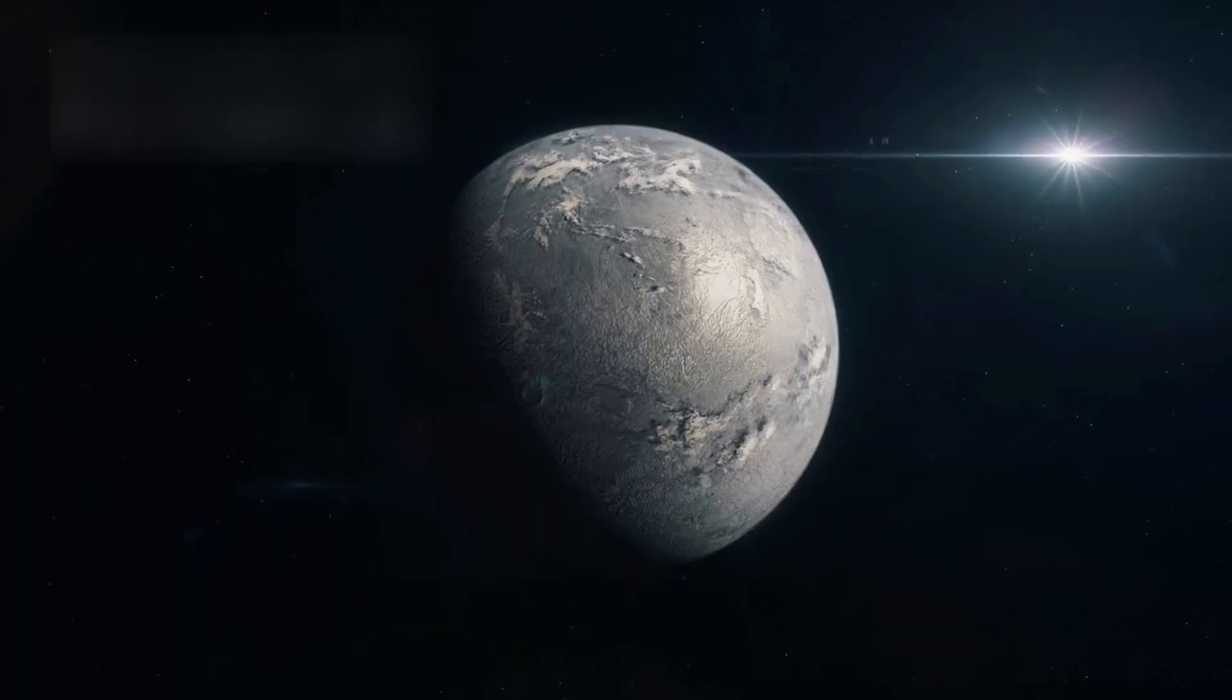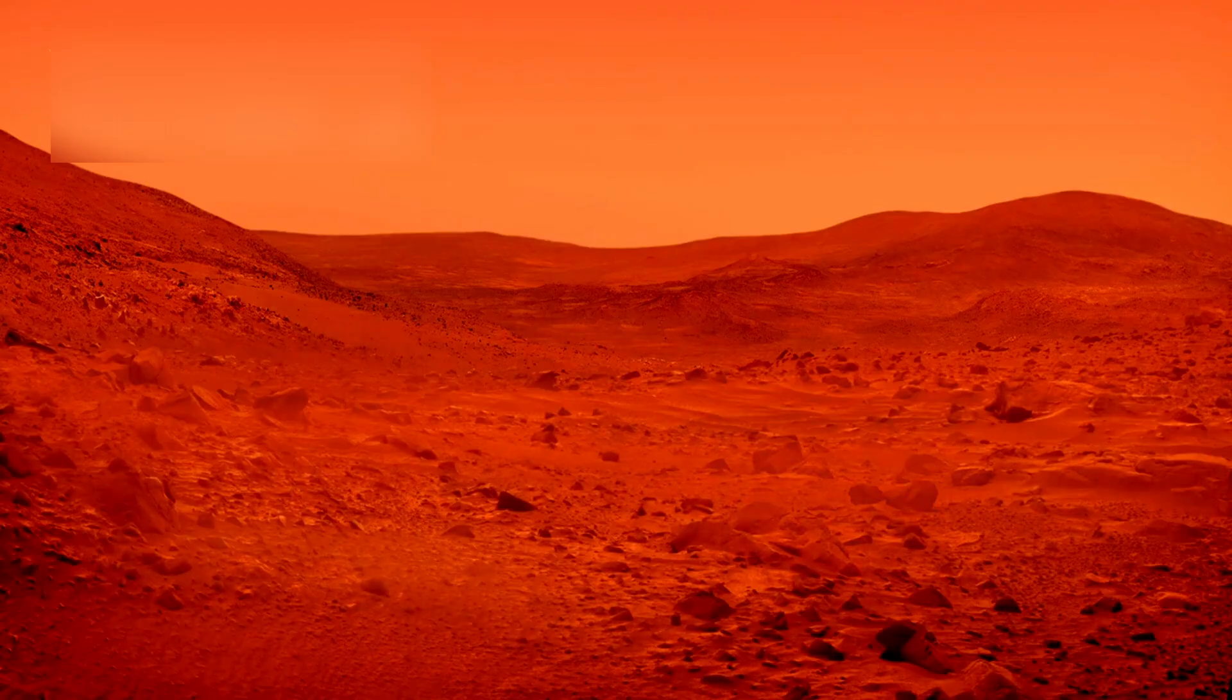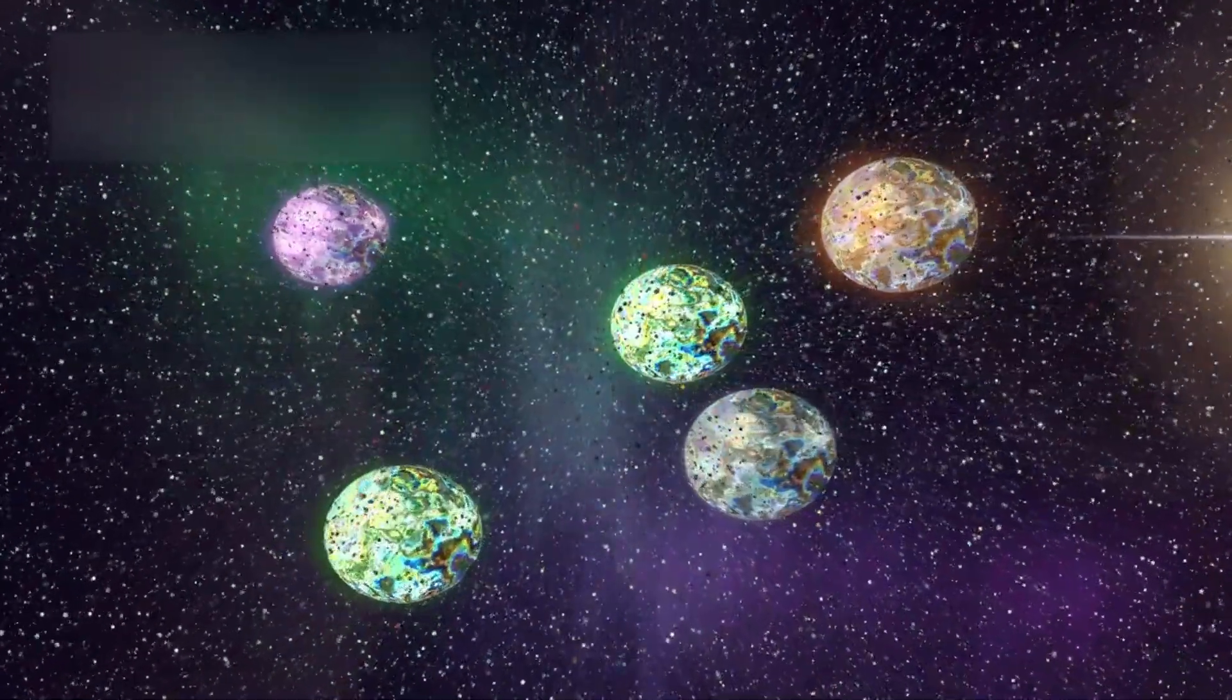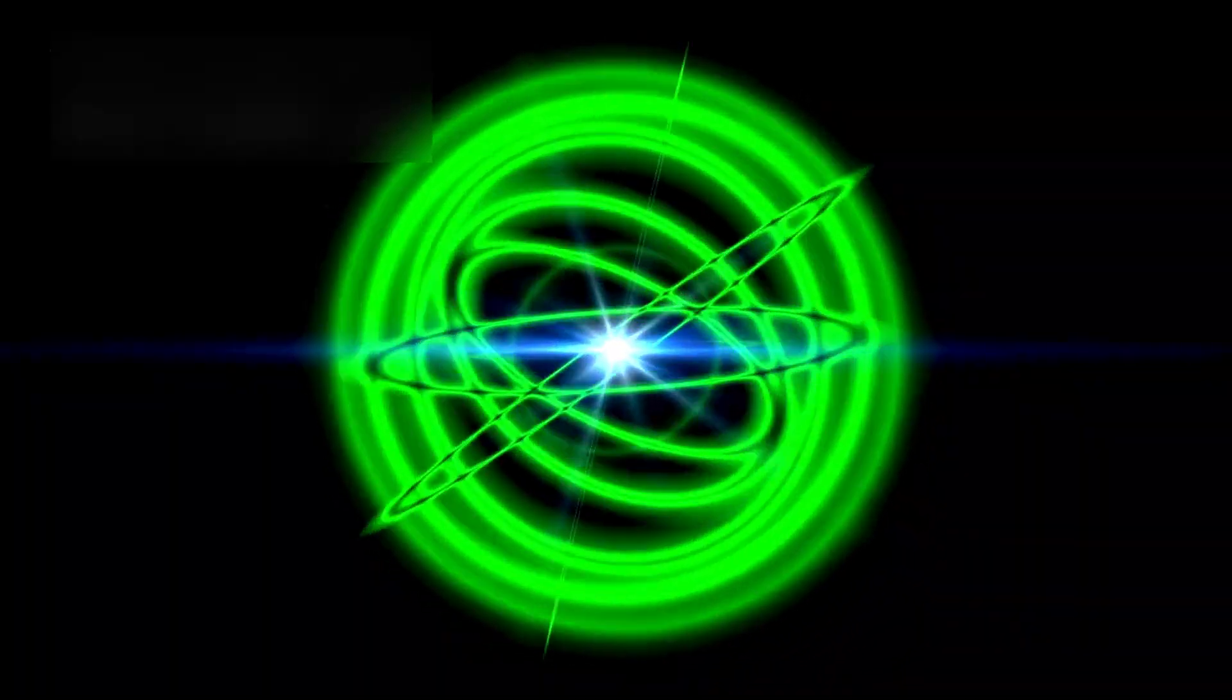Some worlds are barren and frozen. Others swirl with storms, oceans, and rings of ice and dust. Each is a chapter in the story of time, written in the orbit of matter around light.